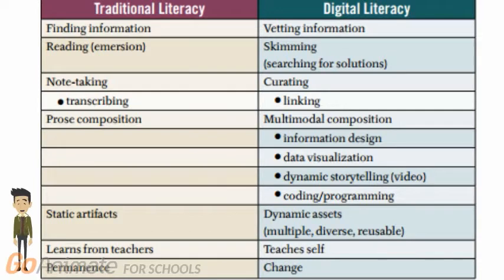Another simple difference between traditional and digital literacy is the way that the text is organized. Traditional prose and nonfiction or fictional books are set up very sequentially by chapters, whereas online, things are broken up and chopped up into all kinds of different pieces. So students need to learn how to attack that visually as well.